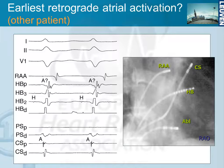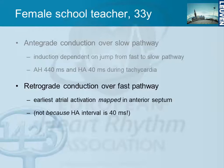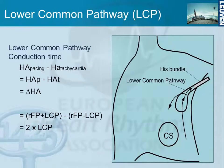Is this slow-fast AVNRT? No, it's not — because if the fast pathway were conducting retrogradely, the anterior septum should be first. What we see first is the posterior septum, so this must be retrograde conduction over a slow pathway. It is the mapping that tells you what is the retrograde conduction, not the timing. A long AH and short HA does not by itself prove slow-fast AVNRT — because the result of a lower common pathway can confuse the picture. That is the third element to consider: the lower common pathway.